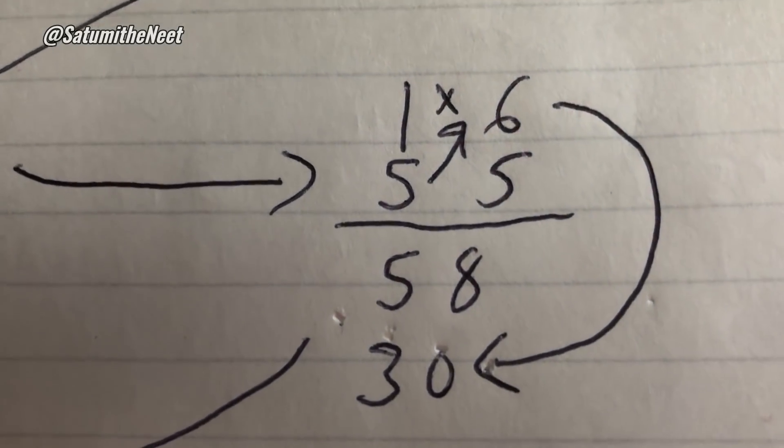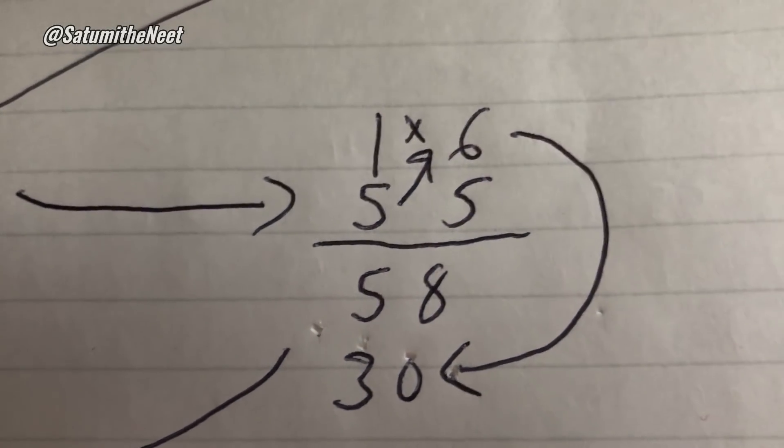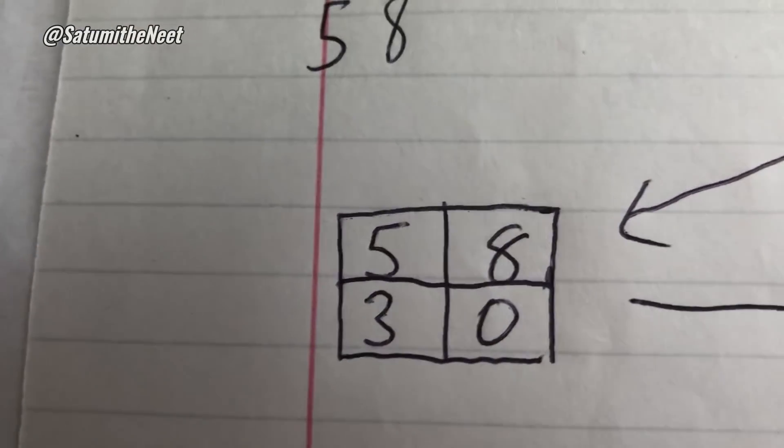But because you cross multiply, you have to put the number row down. Because in order to properly subtract, our numbers has to look like a square.